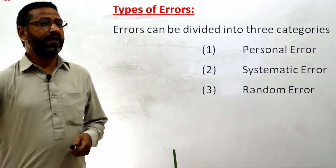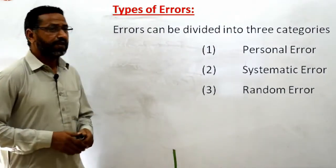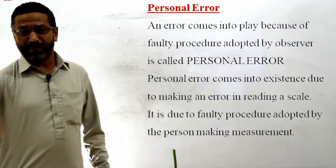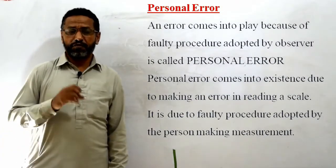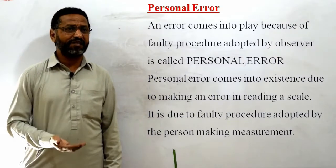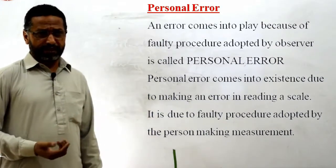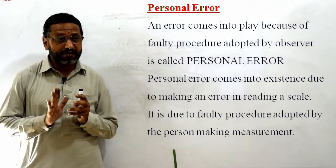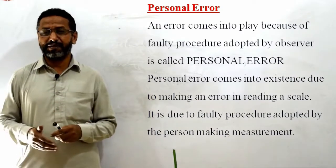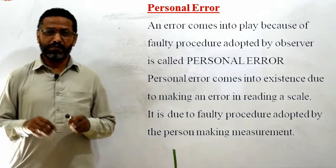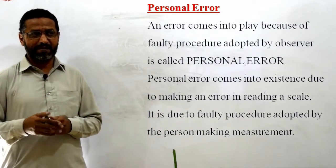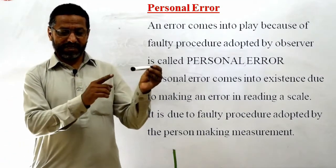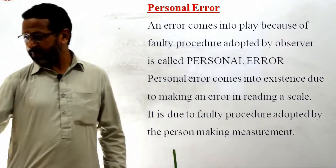Error کی تین types ہیں: personal error، systematic error، اور random error. Personal error: an error that comes into play because of the faulty procedure adopted by the observer is called personal error. It comes into existence due to making an error in reading a scale — یعنی جب reading لینے کا طریقہ غلط ہو، جیسے angle سے پڑھنا، تو اس کو personal error کہتے ہیں.